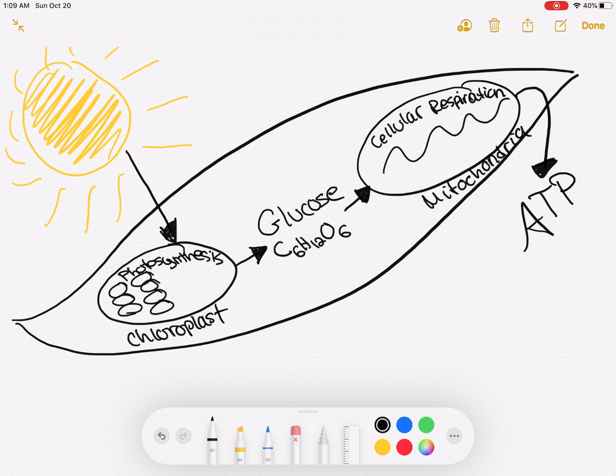The sunlight, the energy from the sun goes into the chloroplast for photosynthesis. That means that sunlight energy is used. And then photosynthesis produces glucose. That glucose is then used as a reactant for cellular respiration in the mitochondria which then produces ATP, another form of chemical energy.